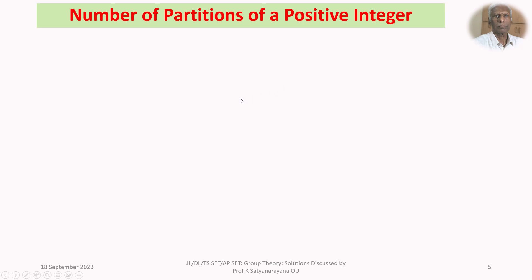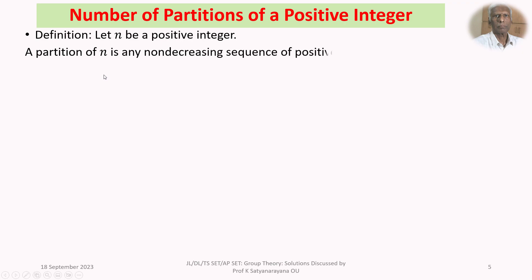The first concept is the partition of a positive integer. Let N be a positive integer. A partition of N is defined as any non-decreasing sequence of positive integers whose sum is N. That is, N1 ≤ N2 ≤ ... ≤ Nk, where N1 + N2 + ... + Nk = N. Then N1, N2, ..., Nk is called a partition of N.